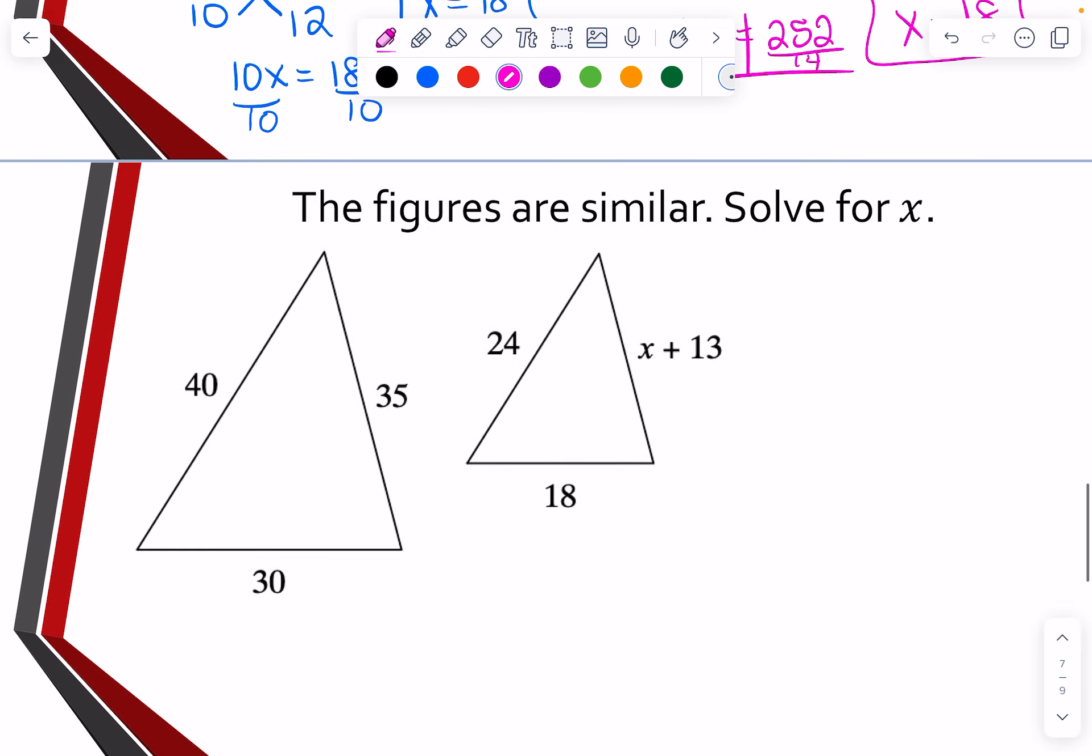Let's try another one here. So if I look, which one's completely filled in? Well, I see that 30 and 18 are corresponding. So I'm going to use that. So I'm going to go 30 is to 18 as 35 is to X plus 13. Now at this point to solve this, I'm going to cross multiply.